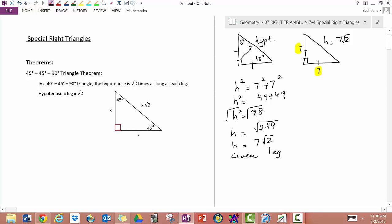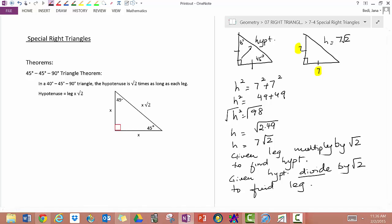So remember this: given leg, multiply by root 2 to find hypotenuse. So you would do exactly the opposite if you were given hypotenuse, divide by root 2 to find leg. And this is of course when you have a 45-45-90 triangle.